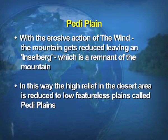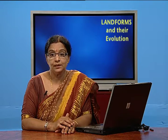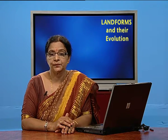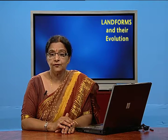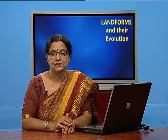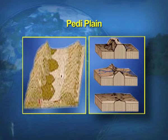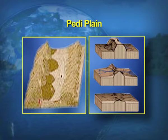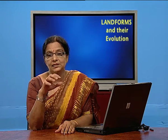First, what are paddy plains? With the erosive action of the wind, the mountain gets reduced leaving an Inselberg. Inselberg is a remnant of a mountain. In this way, the high relief in the desert area is reduced to low featureless plains, which are known as paddy plains. Looking at the screen, the visual shows some area higher than the normal ground level — that feature is known as an Inselberg, a remnant of the mountain.